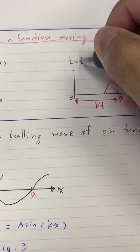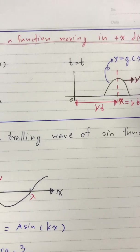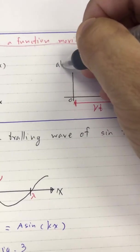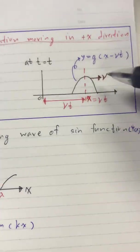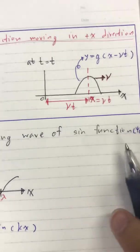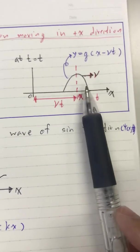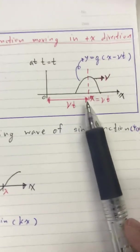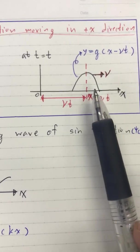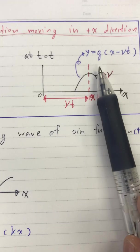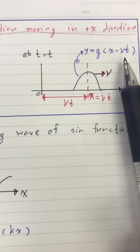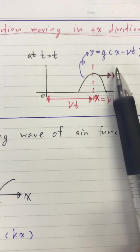When time passes to t, the wave moves in the positive x direction. The distance it moves equals the velocity multiplied by t. Therefore the function g can be rewritten as g(x - v·t).